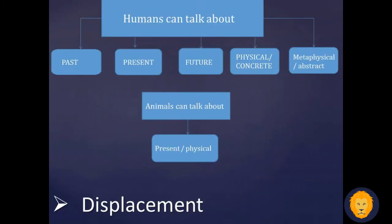The second property is displacement. This is another human property: humans can talk about the past, the present, and the future. They can talk about physical, concrete, factual things that we can touch, and also something that is not present in the moment.